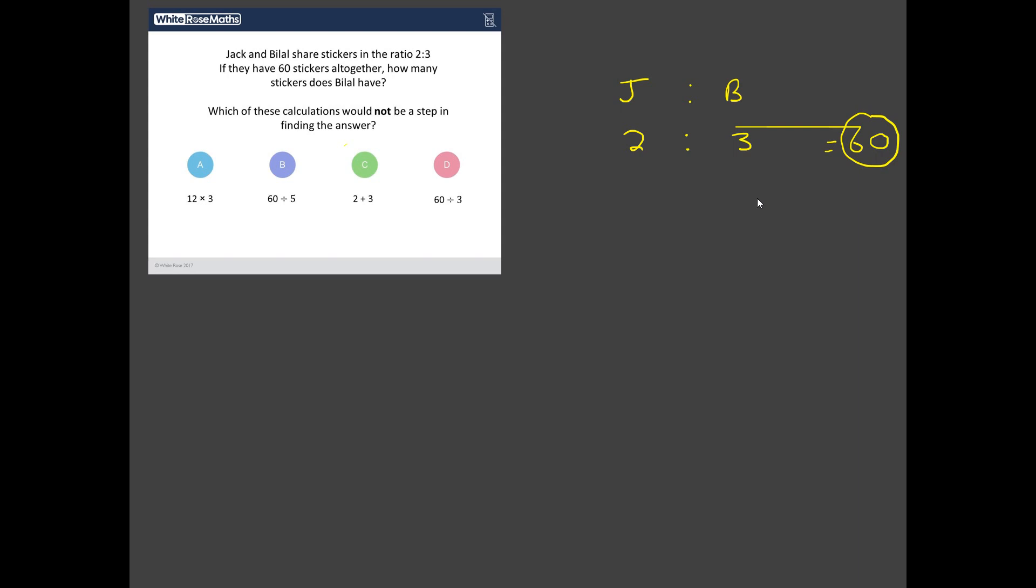So we've got Jack here, and we've got Bilal here, and they share these stickers in the ratio two to three. And in total, we know we've got 60 stickers to play with. So how are we going to work out how many stickers Bilal has? Well, the way I do this is I think, well, Jack's got two parts, and Bilal's got three parts. So in total, they've got two plus three, which equals five parts. And those five parts, well, they must account for all of these 60 stickers. So what's one part worth? Well, to get from five parts to one part, we divide by five. So to get from 60 stickers to one part, we're also going to divide by five. 60 divided by five, I think that comes to 12. So each one of these five parts is worth 12 stickers.